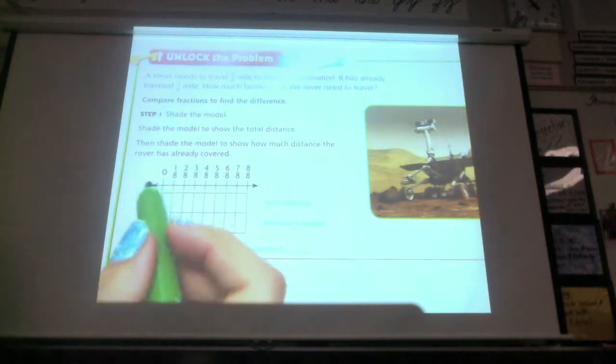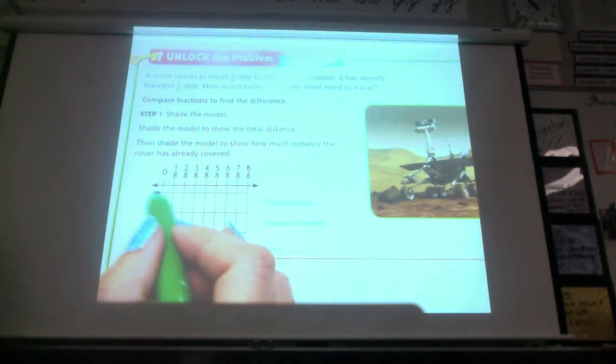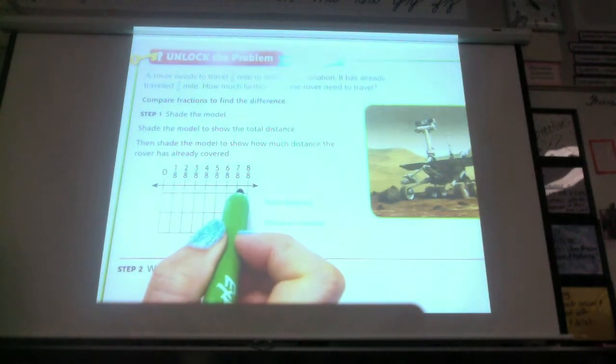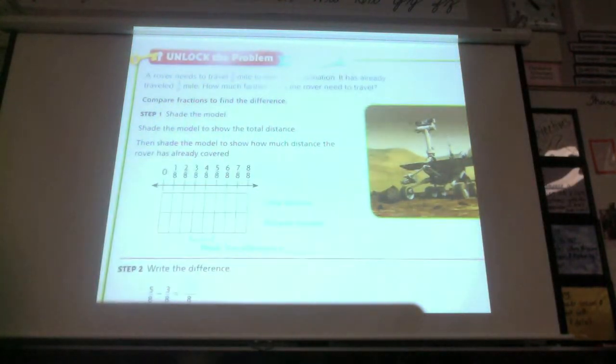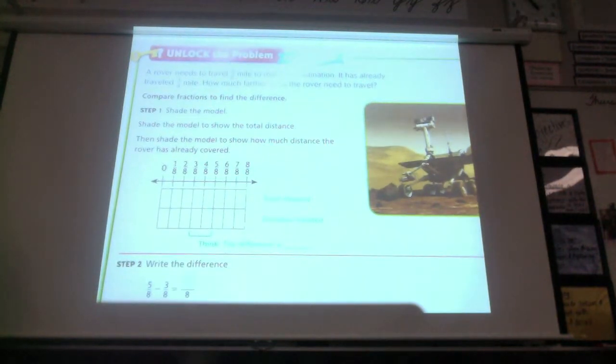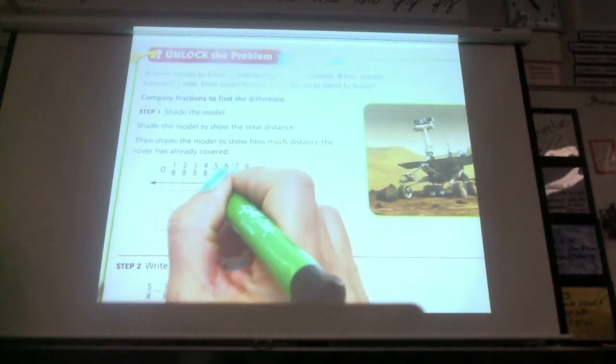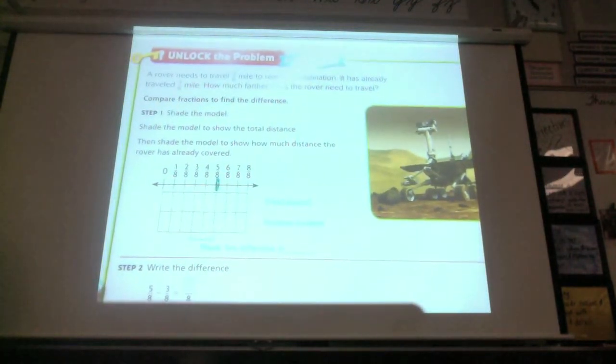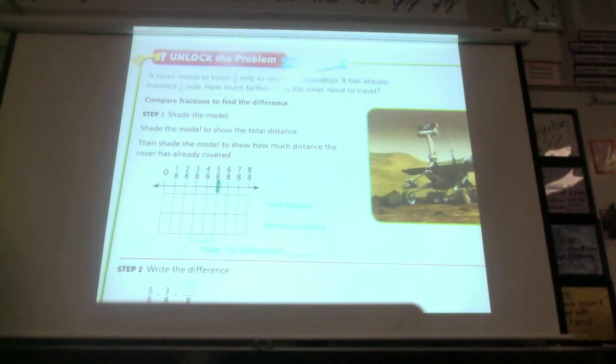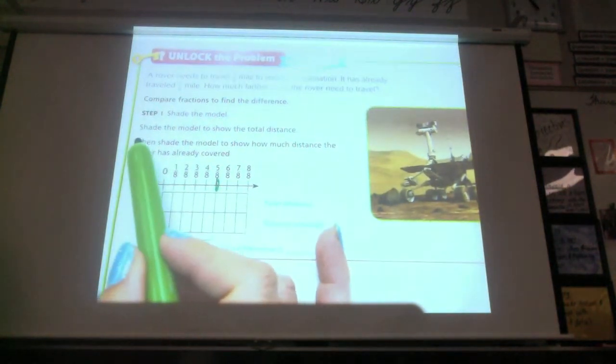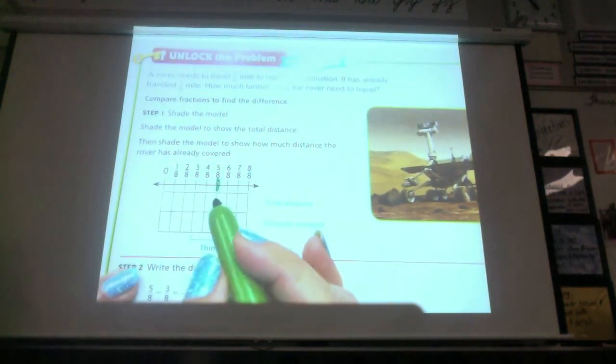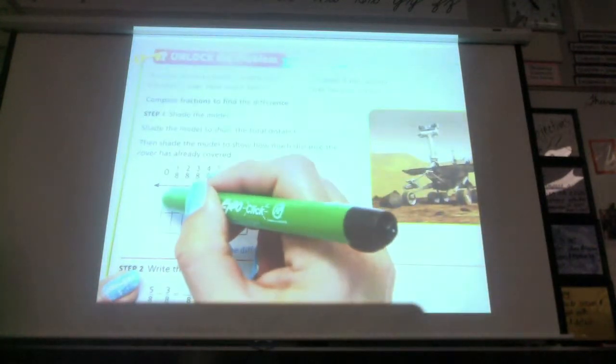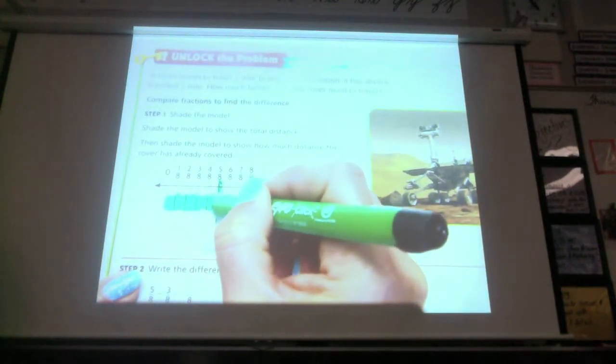So if you do a number line to see how far it has to travel. How far does it have to travel? Look back up at the question to see how far it has to travel. How far does the rover have to travel? Five-eighths of a mile. So if I look at my number line, it has to go this far. So the first direction is shade the model to show the total distance it has to go. So I'm going to go ahead and shade up to five-eighths. Go ahead and do yours.